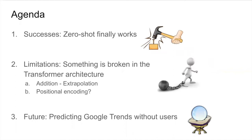In the second part, I'll talk about some limitations of this transformer architecture. I'll show an example where it cannot do simple addition — you give the model two numbers and it cannot do it well. I'll give some evidence that the problem might be in the positional encoding of the transformer architecture and some ways to maybe fix it.